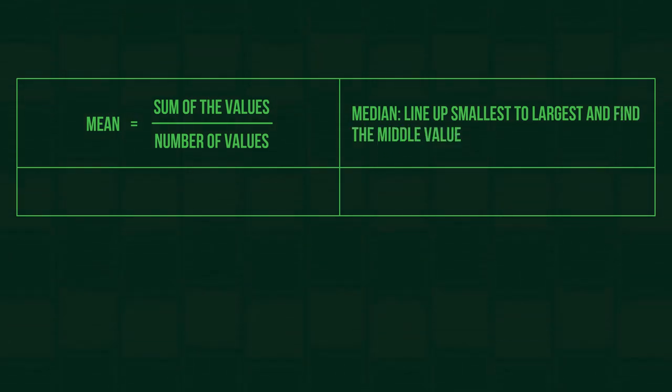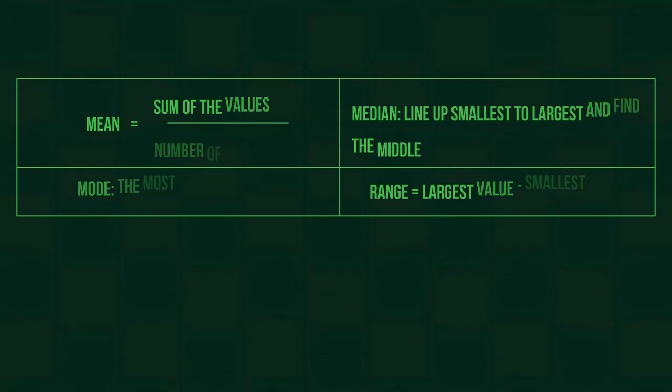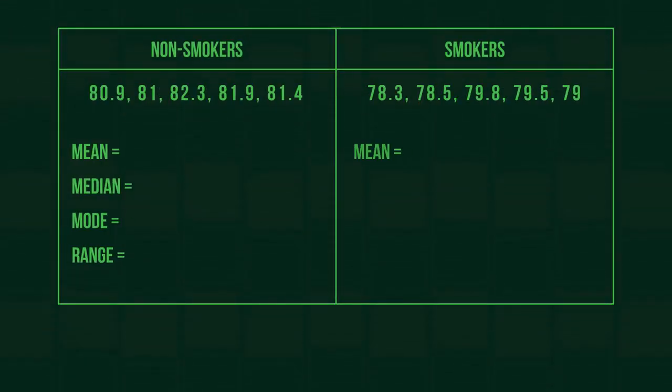You should know how to calculate the mean by adding up all the values and dividing by the number of values, and the median by lining them up from smallest to largest and finding the middle one. And the mode is the most common value, and then the range by subtracting the smallest value from the largest value.